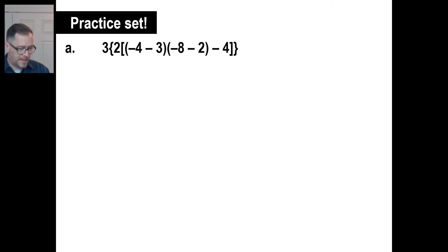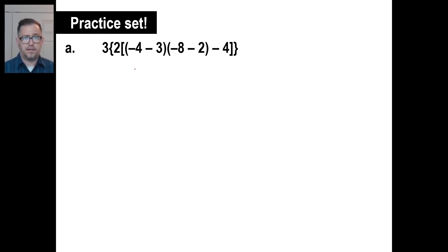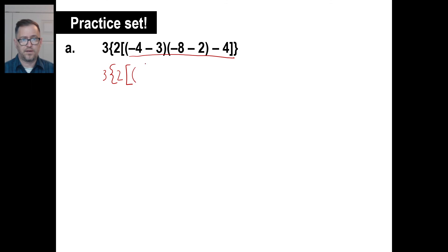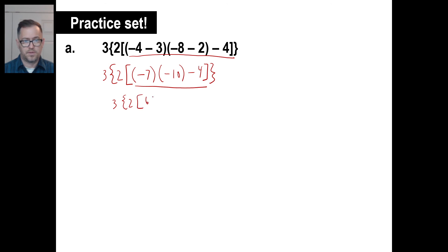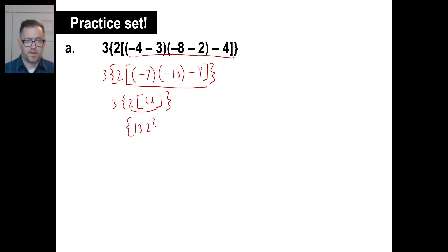Let's look at practice problem A. Pause it, give it a whirl, then come back. Attacking from the inside out: negative 4 minus 3 is negative 7; negative 8 minus 2 is negative 10. Then minus 4 in the fancy bracket. Now working outward: negative 7 times negative 10 is 70; 70 minus 4 is 66. So we have 3 times 2 times 66. Two times 66 is 132, then 3 times 132 is 396.